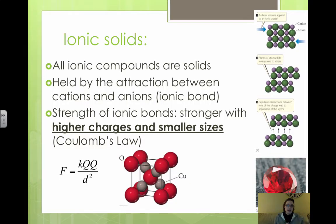Ionic solids are held together by the attraction between the cations and the anions. All ionic compounds are solids — whether you have sodium chloride, cesium chloride, calcium chloride, or calcium oxide, all ionic compounds are solids. They all have a cation and an anion, and they're held together by the attraction between these ions, which is an ionic bond.